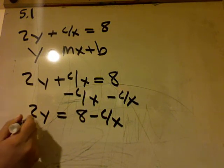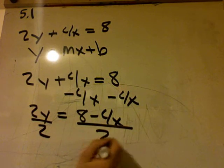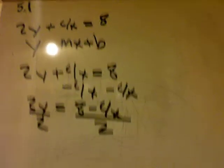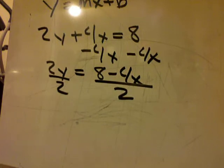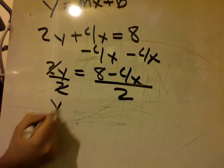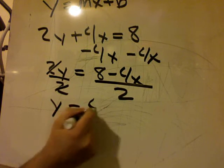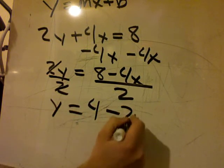I'm going to divide by 2. Divide by 2. Multiply by the reciprocal. So this is going to give me y equals, 2 goes into 8, 4 times minus 2x.